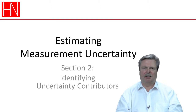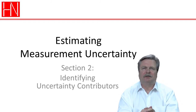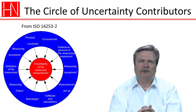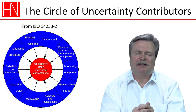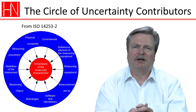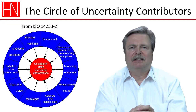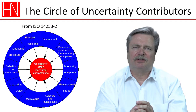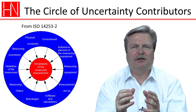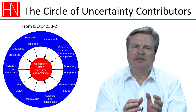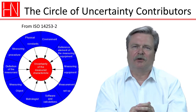The way that I propose that you do this is that in the material, there is a page with what we call the circle of uncertainty contributors. It is from a standard called ISO 14253 part 2. The idea is that it gives you 10 areas where you might look and consider whether there are uncertainty contributors to take into account.